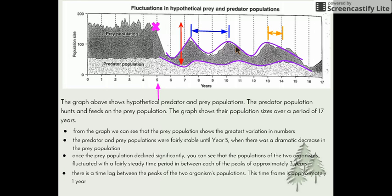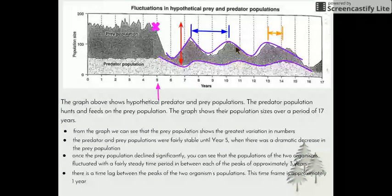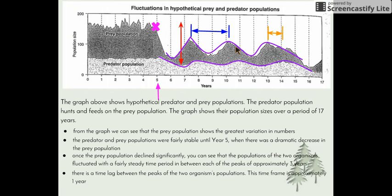There is a time lag between the peaks of the two organism populations of about a year, which is expected given life cycles. The prey population increases and provides food for the predators; the predators then reproduce more offspring, and once those offspring are old enough to eat the prey, the prey population will then begin to decline.